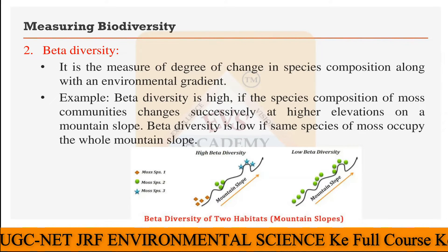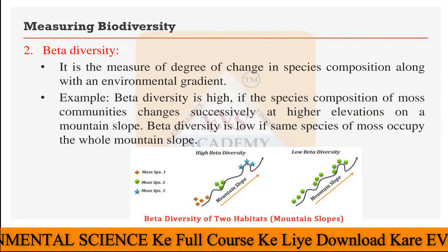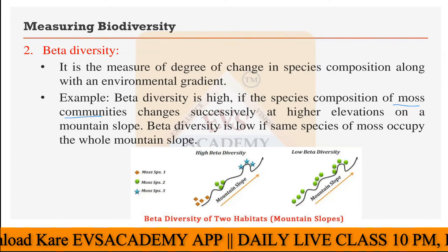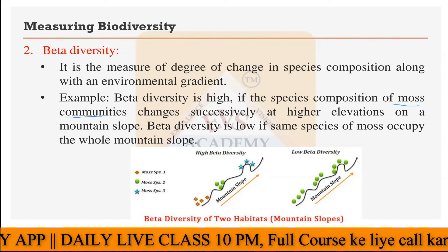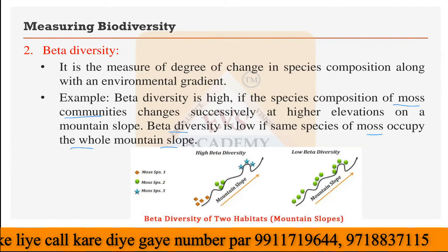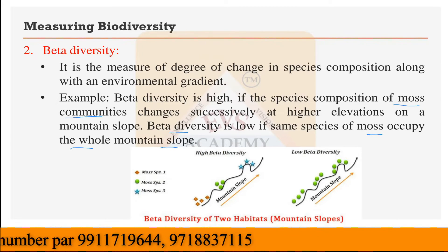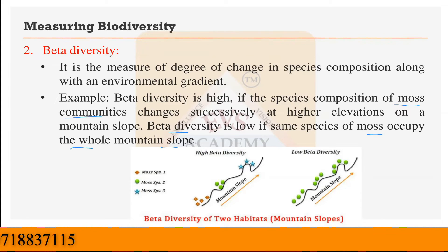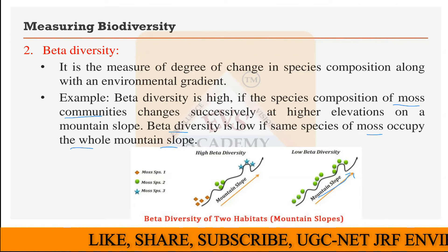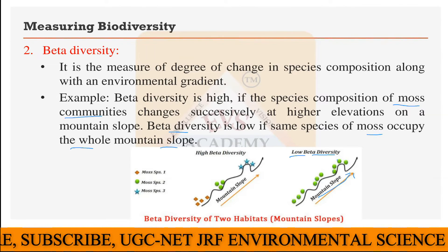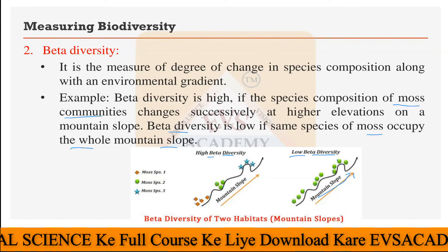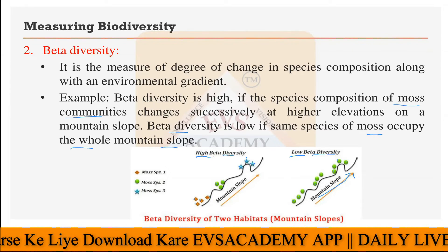Beta diversity is high if the species composition of the moss communities changes successively at higher elevation. As you move up in the mountain, the moss species you find are different from those at lower elevations or plains. Beta diversity is low if the same species of moss occupy the whole mountain slope. If there is no change in the mosses as you move up, then beta diversity is very low. In the example shown, if the mosses on the mountain slope are all the same kind with no changes at all, that is low beta diversity. If at one level you find one type of moss, then at a higher level another type, and even higher yet another type, that is high beta diversity.